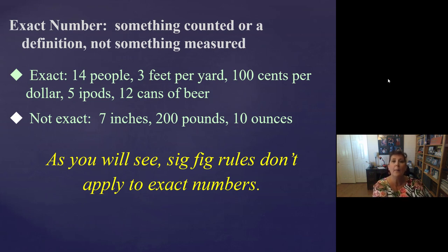Now, before we get to an example, I want to tell you about exact numbers. This is something that's counted, or it's a definition. It's not something that's measured. So like, maybe there are 14 people in your lab. A definition would be three feet per yard. There's exactly three feet in a yard. A hundred cents per dollar is also a definition. There's exactly a hundred cents per dollar. So if you can use the word exactly, it's exact. In a ruler, there are 12 inches in a foot. That's exact, 12 inches in a foot. Five iPods. Maybe there's five iPods in your city. Those are old things. People don't buy iPods anymore. Twelve cans of beer. Twelve. That's an exact number. Not 11 and a half. You don't buy 11 and a half cans of beer. It's 12. Twelve cans of beer. That's an exact number.